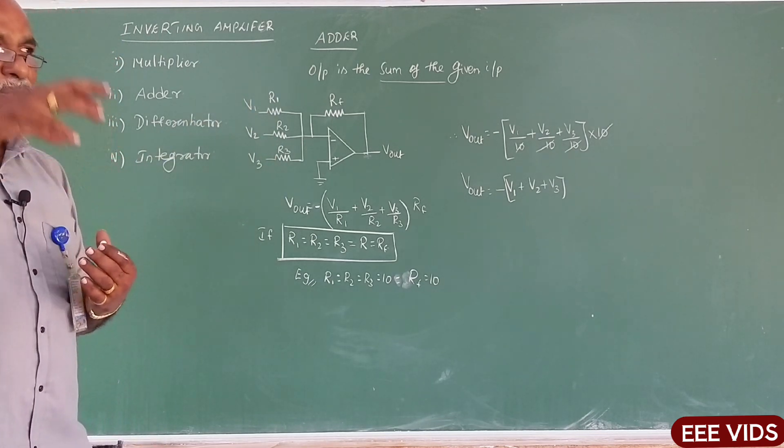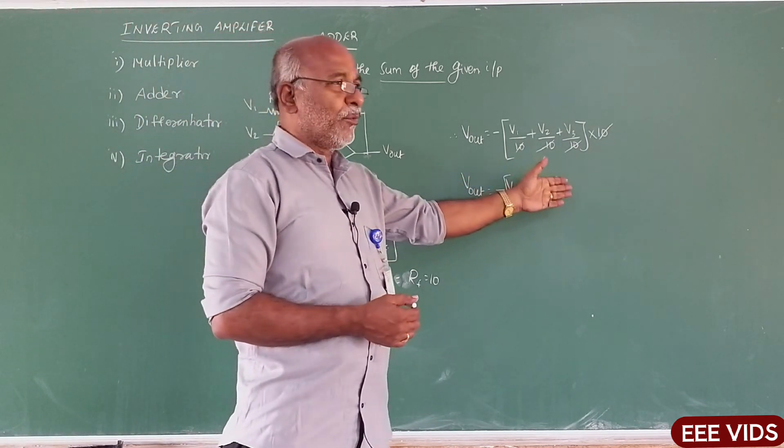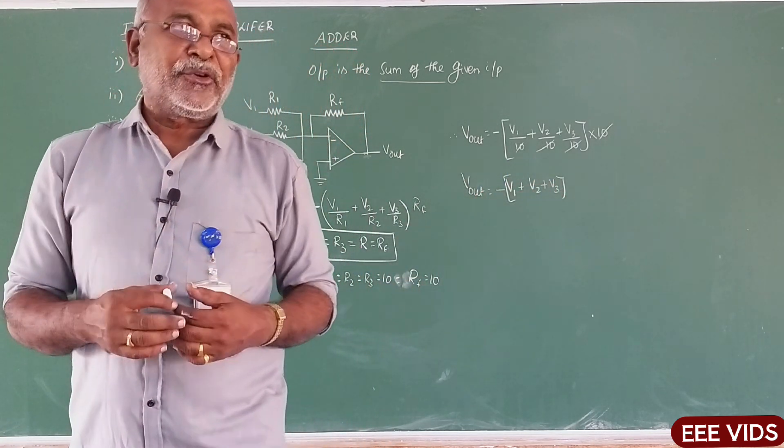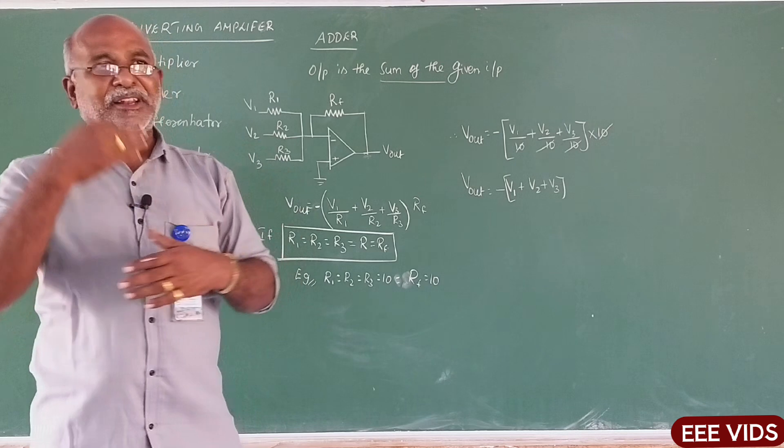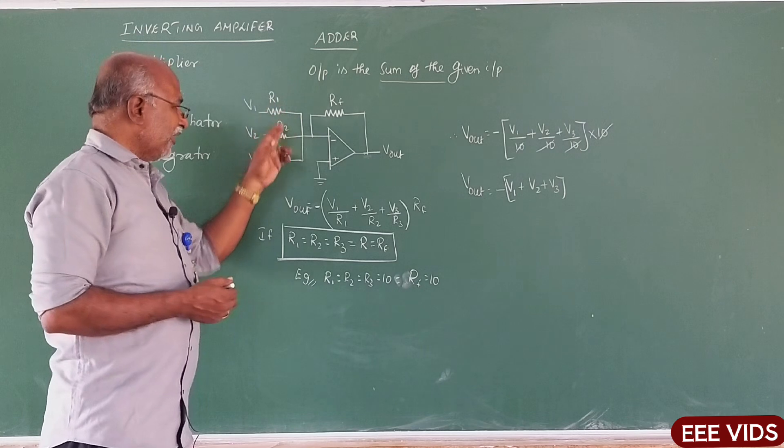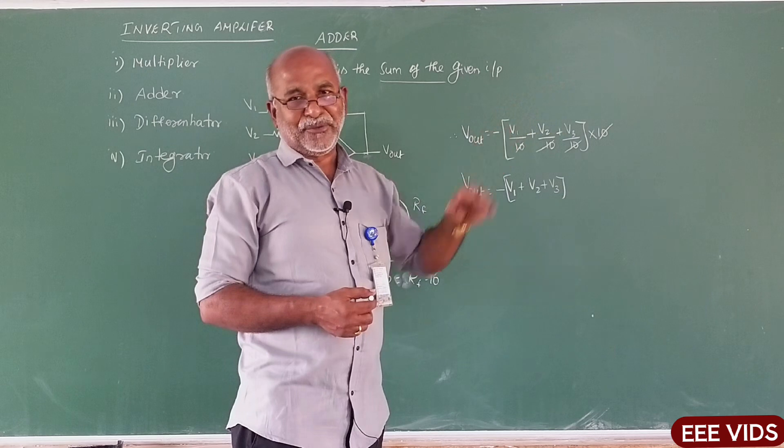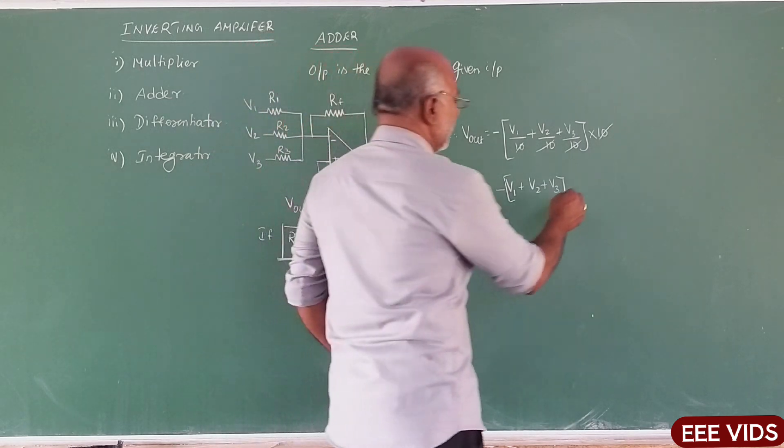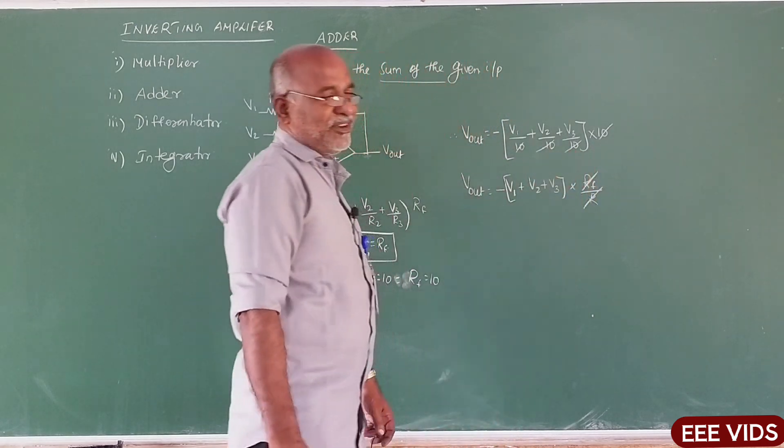Inputs are added. For example, if the voltage applied is 1 volt, 2 volt, 3 volt, 1 plus 2 plus 3. So the inputs applied are added and the output comes out. If we use all the resistances with the same value, suppose instead of 10 Ohm we use 100 Ohm, if all are 100 Ohm and Rf is 100 Ohm, this all cancels. 10 by 10 cancel.